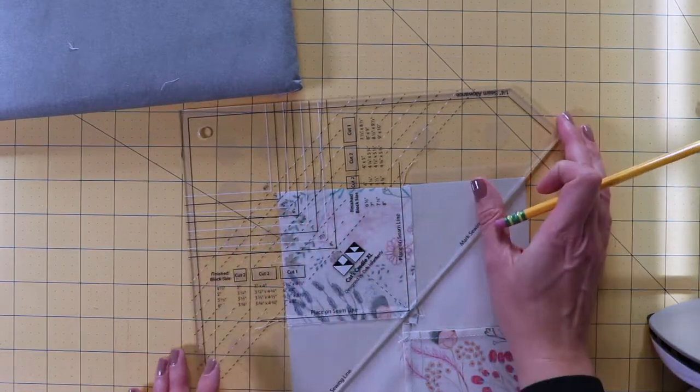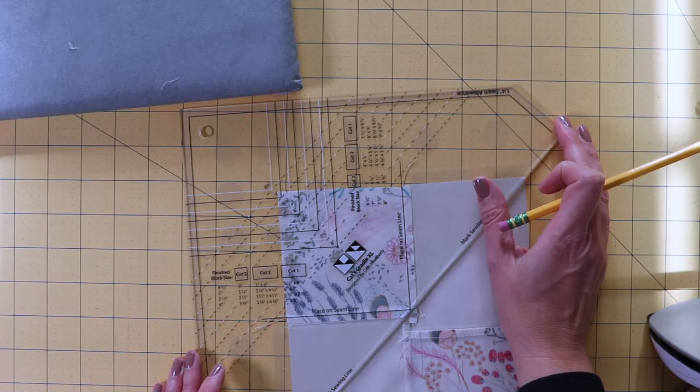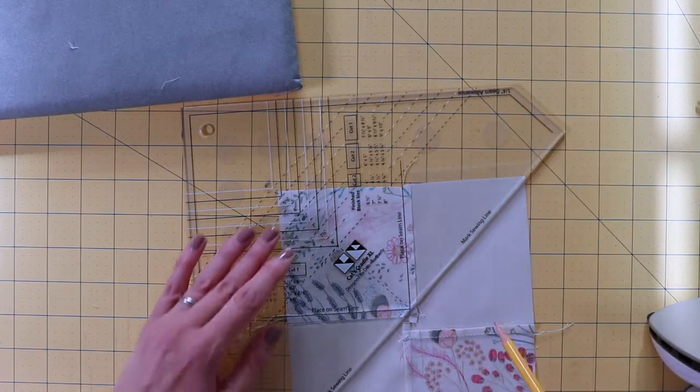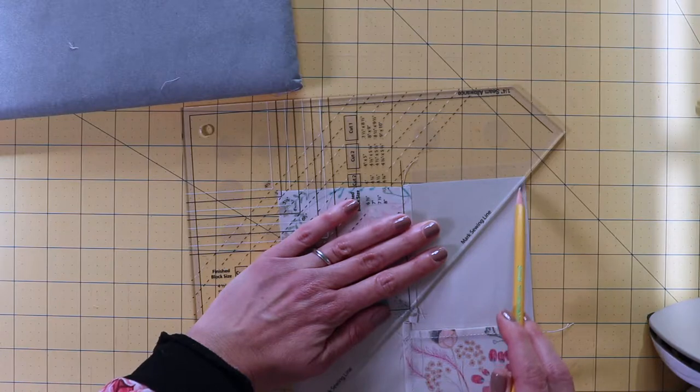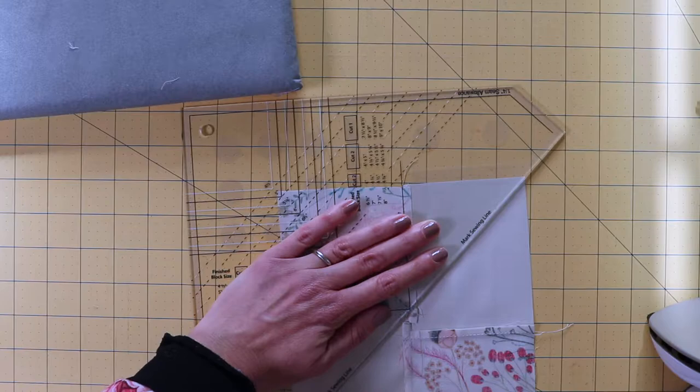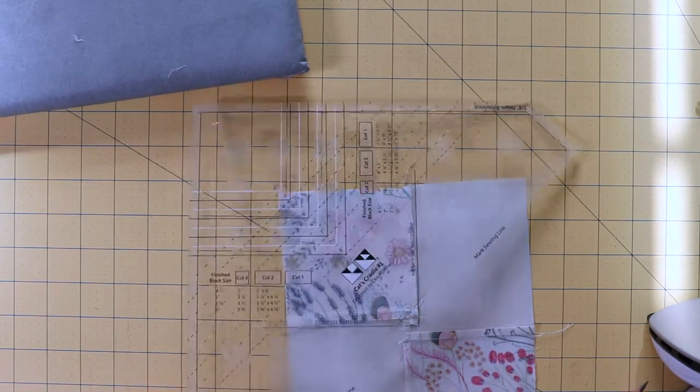Then with a pencil, or you could use a quilter's pen—I like to use the pencil, you can see it better—and you're not going to see it in the end, so you don't need to worry about it going away. I would just choose something that's not going to bleed on the fabric later on, like a pen might. So that's your first sewing line.